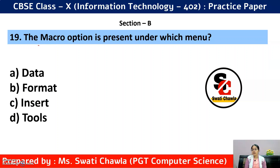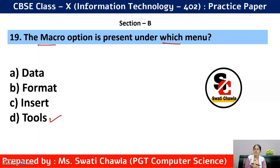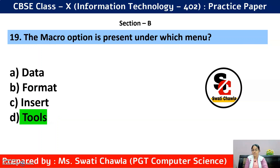Question 19: The Macro option is present under which menu? Answer: Tools menu. This type of question is important — Styles and Formatting is under Format menu, Goal Seek is under Tools menu, and Macro option is also under Tools menu.